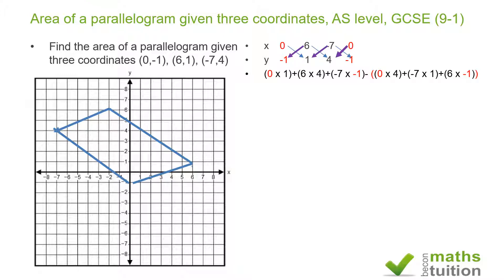Then I add these and subtract, and I get 31 minus -13, and that gives me an area of 44 square units. So much easier than trying to find the height and the base.